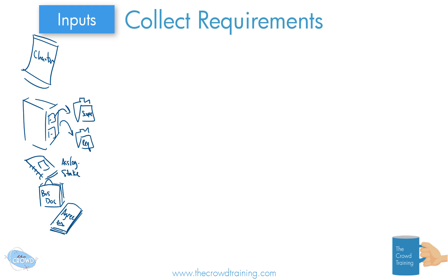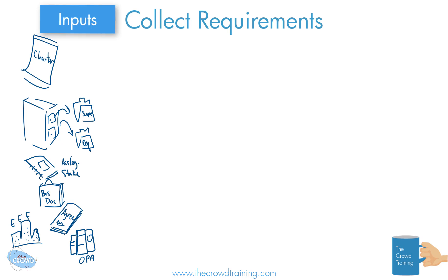And as always, we'll have those enterprise environmental factors — I'm drawing some buildings here to stand for enterprise environmental factors — as well as the various different organizational process assets, which I'll represent with binders. Things like templates, or maybe we already have a way to organize or do this — those would be the OPAs, or organizational process assets.